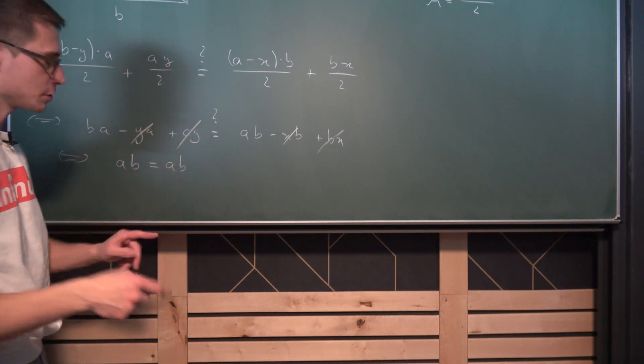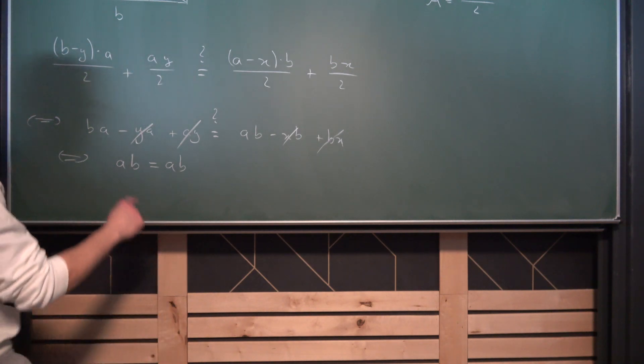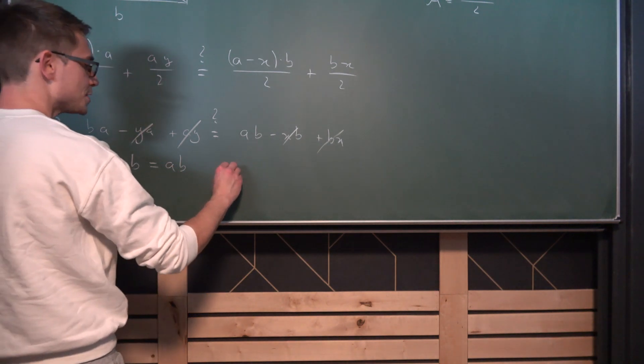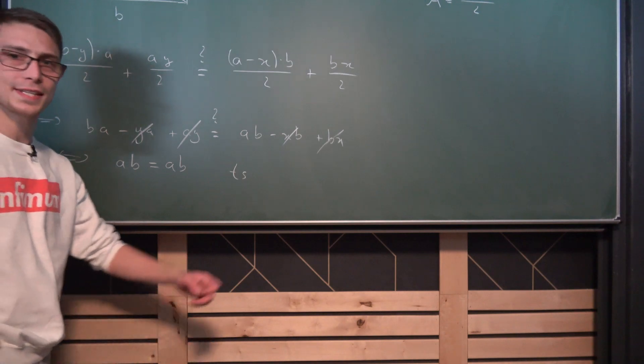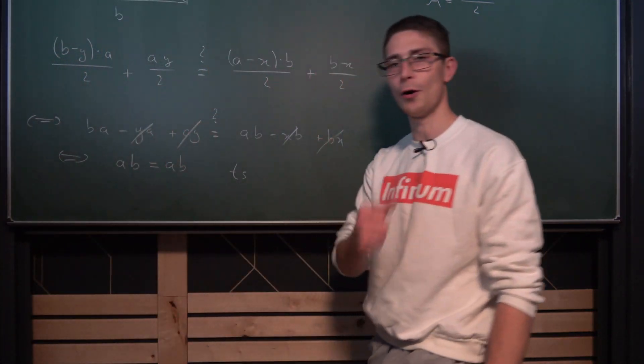Or in other words, due to the commutative property of real numbers, AB is equal to AB, which is a true statement. And hence we are already done. This right here calls for a QED with an EZ in here.